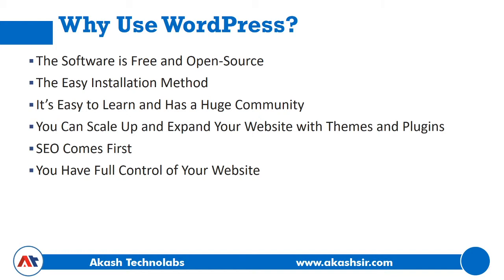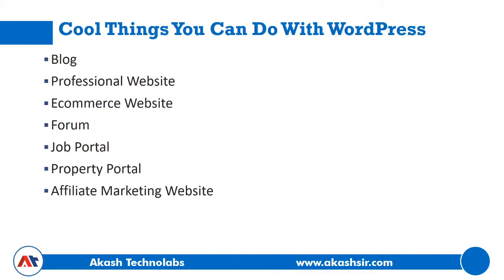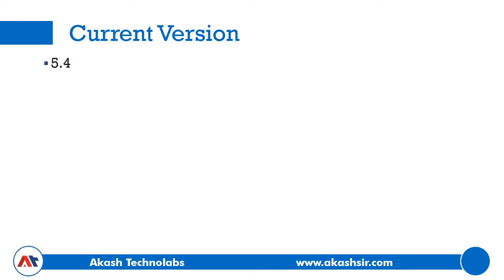Cool things you can do with WordPress: you can create a blog — everyone is writing and publishing content nowadays. You can create a newspaper-style website, professional business or agency websites, e-commerce websites similar to Amazon, forum sites, job portals, property portals, and affiliate marketing websites. With WordPress you can create any kind of website. The current version is 5.4 and you can also download older versions.